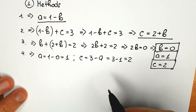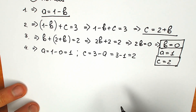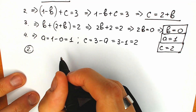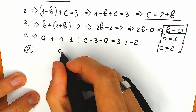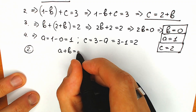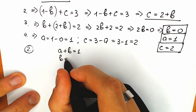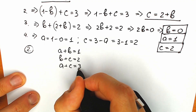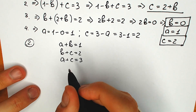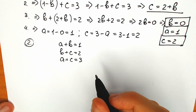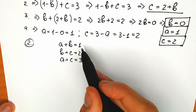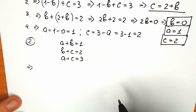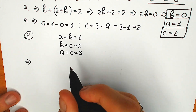This is our first method — the substitution method. Now I'm going to show you the second method. Let me rewrite the equations: a plus b equal to 1, b plus c equal to 2, and a plus c equal to 3. The second method involves subtracting equations.